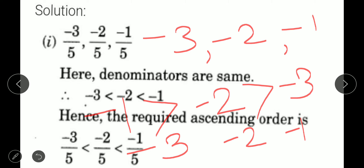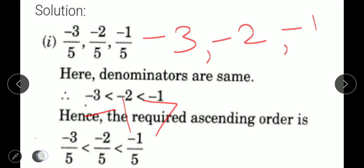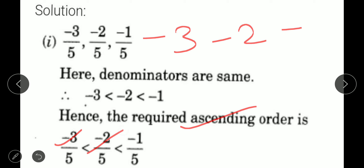Sometimes we get confused about which inequality sign to put. Think of it as the beak of a bird — the beak is open toward the greater number. For example, between minus 2 and minus 1: minus 1 is greater, so the beak opens toward minus 1. So in ascending order: minus 3 upon 5, then minus 2 upon 5, then minus 1 upon 5.